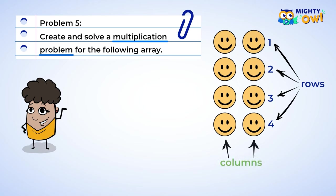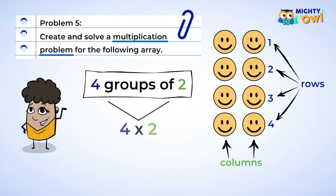Now we count the columns. There are two columns, and this means we have four groups of two. We can now create and solve a multiplication problem. Four multiplied by two. So, the answer is eight. Great job.